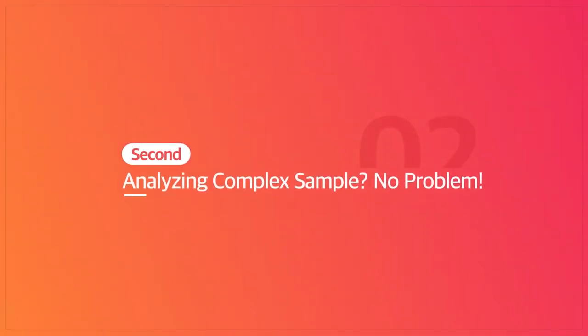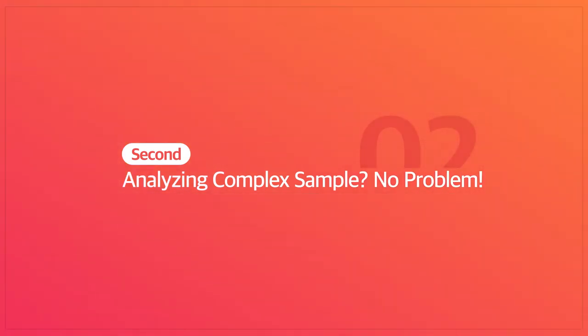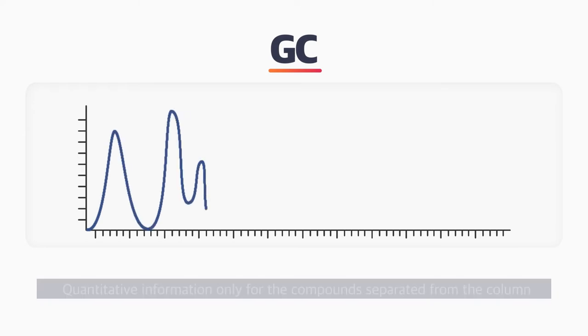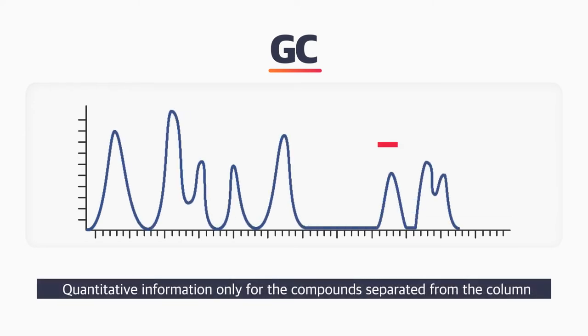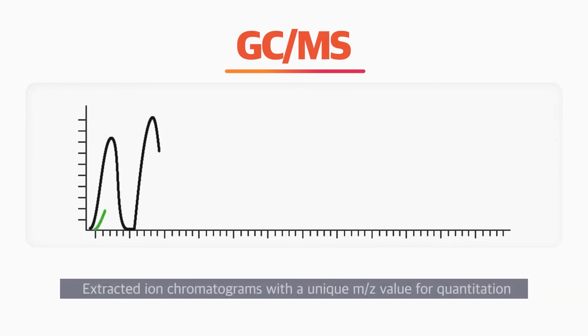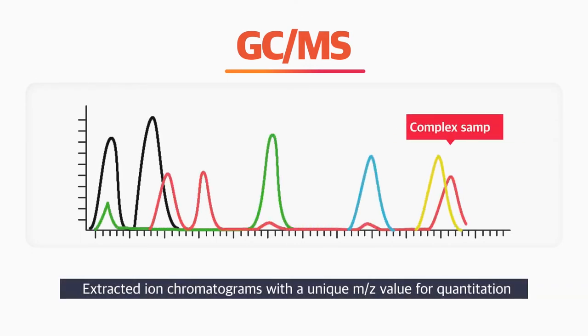Second, analyzing complex samples? No problem. With GC, it only gives quantitative information for the compounds separated from the column. If the complex compounds are eluted close together, the determination can't be accurate. GC-MS provides extracted ion chromatograms with a unique mass-to-charge value for quantitation, so the determination of complex samples not completely separated in the column can be done.